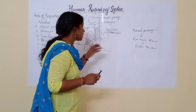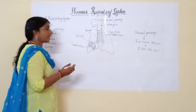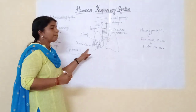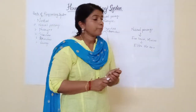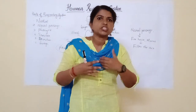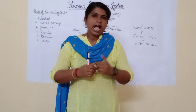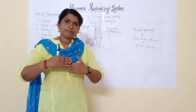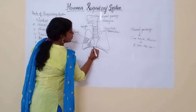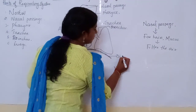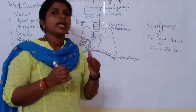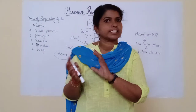Another important point: the lungs are surrounded and protected by a membrane called the pleura. The lungs are placed here in our chest cavity, on the thoracic cavity. This thoracic cavity is separated from the abdominal cavity by an arch-shaped diaphragm at the waist. This diaphragm is very important during the breathing process, which will be discussed in the next class.